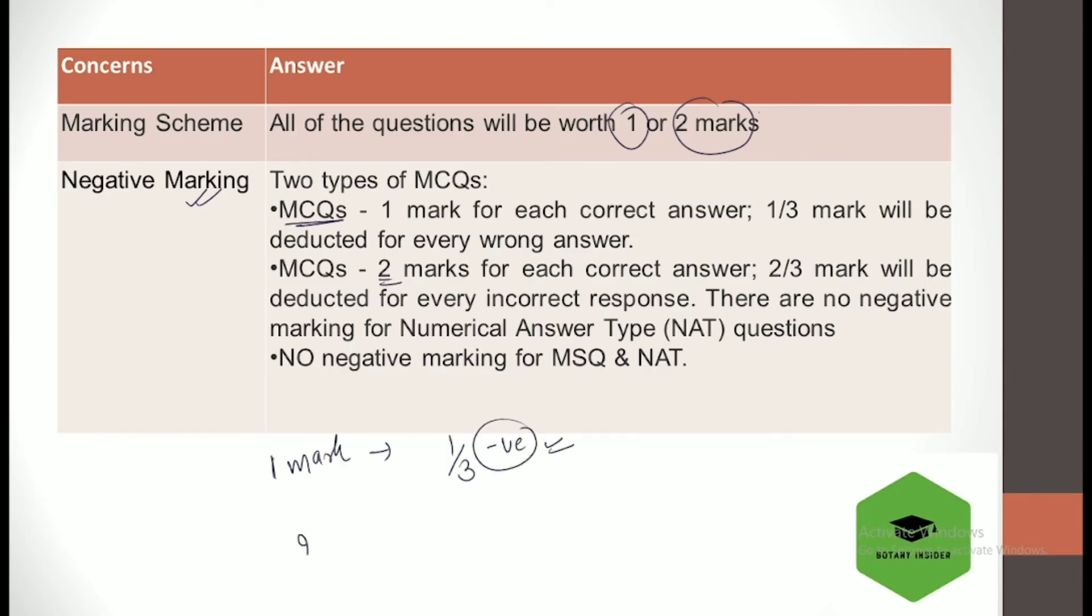If the question is of two marks, then for every incorrect answer you get two by three negative. There are no negatives for MSQ and NAT, that means for the multiple select questions and the numerical-based type of questions, there is no negative marking.